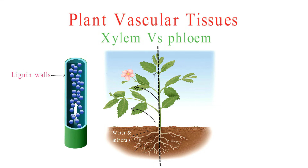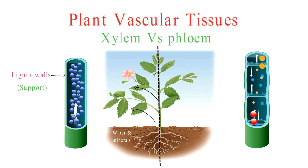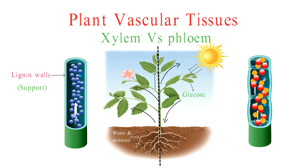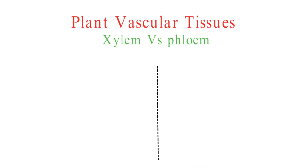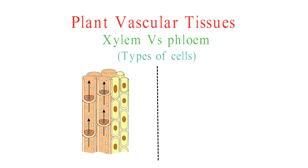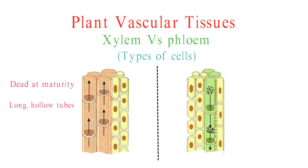Phloem, on the other hand, is all about moving food. It transports the products of photosynthesis, such as sugars and other organic compounds, from the leaves where they are produced to other parts of the plant for growth, storage, or energy. One of the key differences between phloem and xylem lies in the types of cells they are composed of. Xylem cells are mostly dead at maturity, forming long, hollow tubes, while phloem cells are alive and actively involved in the transportation process.